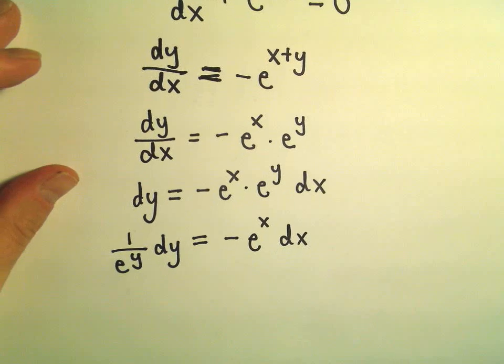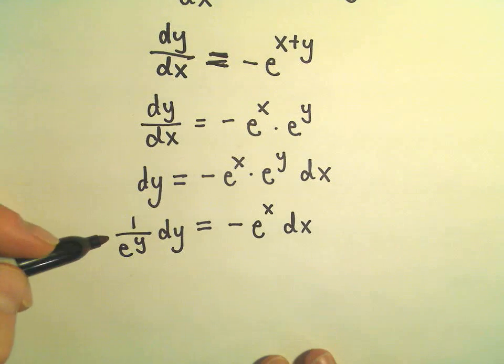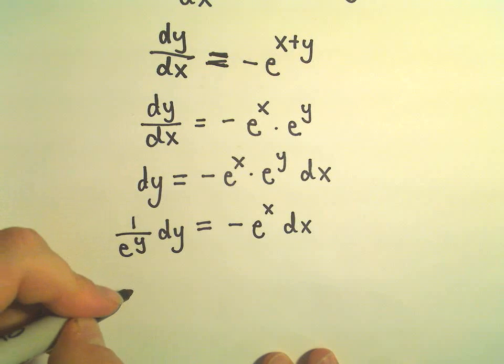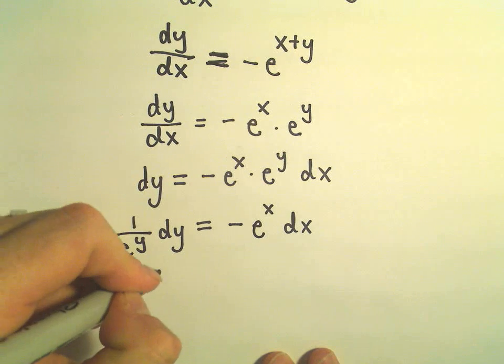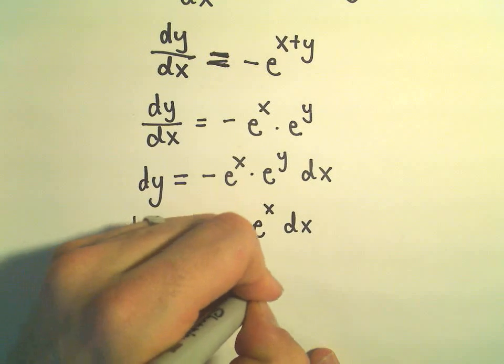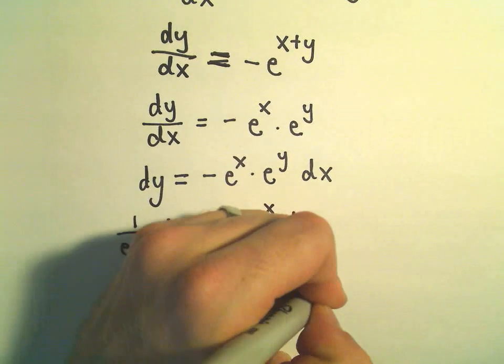I'm going to do one more thing. Because eventually our goal here is to integrate this, the one over e to the y, I'm going to write that as e to the negative y dy. And then we've got negative e to the x dx.